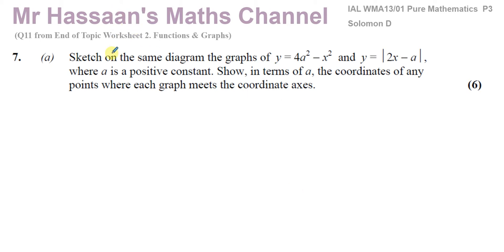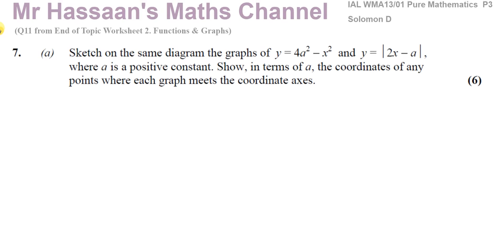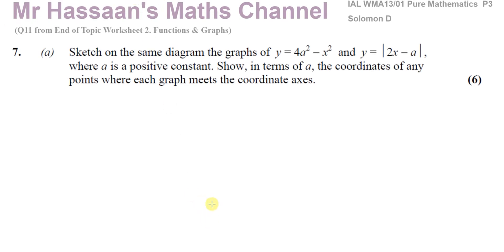In this question we're asked to sketch on the same diagram the graphs of y equals 4a squared minus x squared, and y is equal to the modulus of 2x minus a, all inside the modulus sign, where a is a positive constant, showing in terms of a the coordinates of any points where each graph meets the coordinate axes. So here we have a quadratic and a linear function inside the modulus, and we have to make a sketch of both graphs on the same pair of axes.